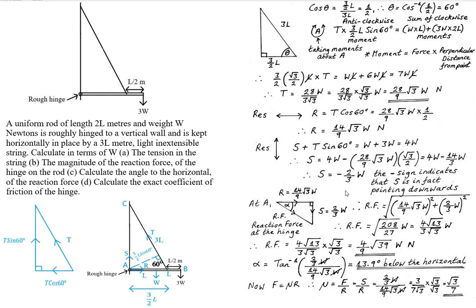Now that R and S are found, we can find the reaction force RF at the rough hinge. Creating a force triangle with horizontal force R and downward force S = 2/3 W, and using Pythagoras' theorem, we can find the magnitude of the reaction force. Rationalising the denominator by multiplying top and bottom by √3, this simplifies to a reaction force of magnitude 4/9 × √39 W Newtons.